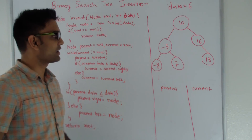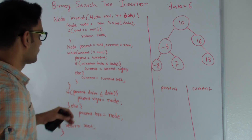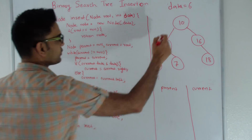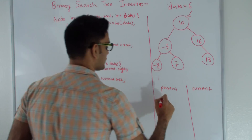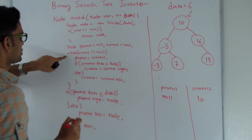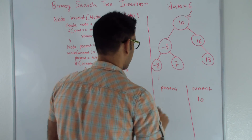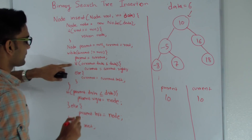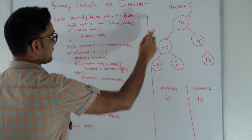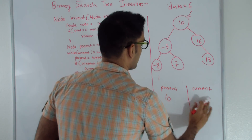Let's trace through inserting 6 into this binary search tree. We create a new node 6 and check if root is null — root is 10, so it's not null. Parent is null initially and current is root, so current is 10. The while loop runs since current is not null. Parent becomes current (parent becomes 10). We check if current data is less than or equal to data: 10 is greater than 6, so we go into the else condition and set current to current's left, which is minus 5.